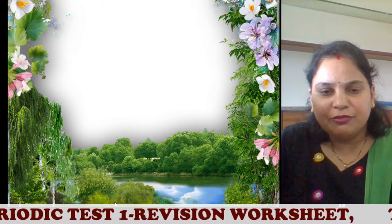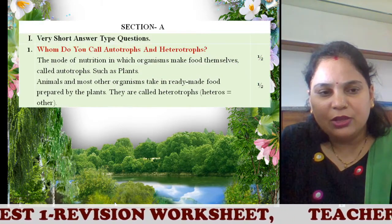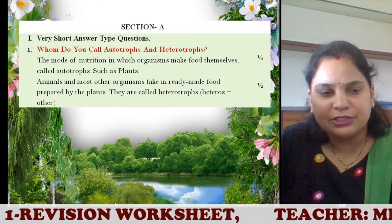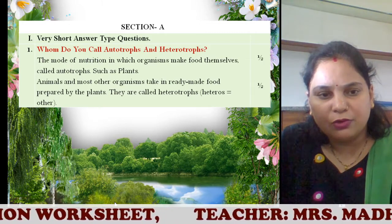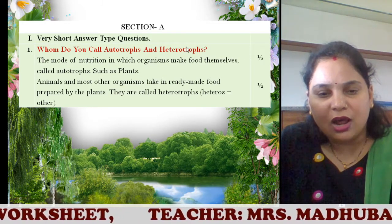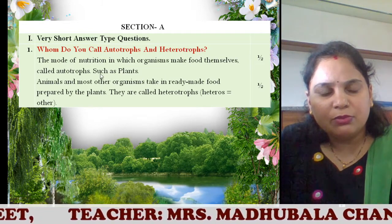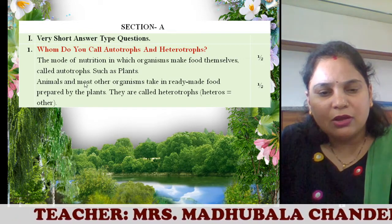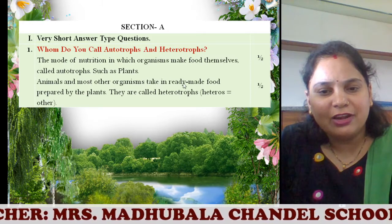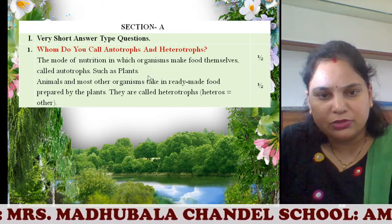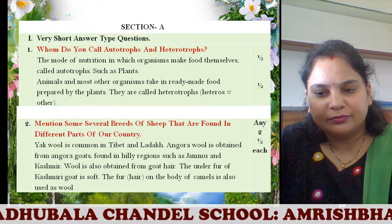So the moment you get your question paper, first read, go section wise. You need to write section A first. In section A, you have the first question — very short answer type questions. For example, the first question given to you is: whom do you call autotrophs and heterotrophs? Now in this, both autotrophs and heterotrophs are asked. So you have to write the answer and you will get half marks for each. You can give an example also. The mode of nutrition in which organisms make food themselves is called autotrophs — example is plants. Animals and most other organisms take in ready-made food prepared by plants and therefore they are called heterotrophs. If you write both points, you get half and half.